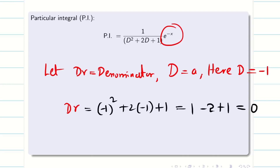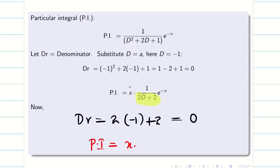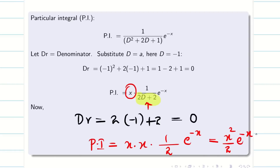We get zero again, so the rule fails. Pre-multiply by x and differentiate the denominator to get 2D + 2, then substitute D = −1: 2(−1) + 2 = 0 — still zero. We must repeat the procedure: pre-multiply by another x (giving x²) and differentiate 2D + 2 to get 2, which has no D term. Substituting gives 2 ≠ 0. Therefore PI = (x²/2)e^(−x).